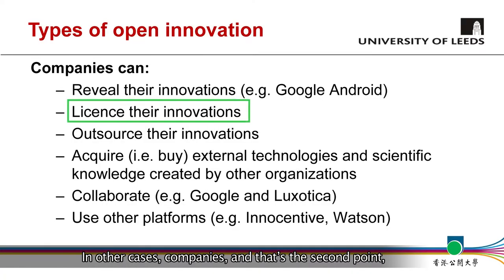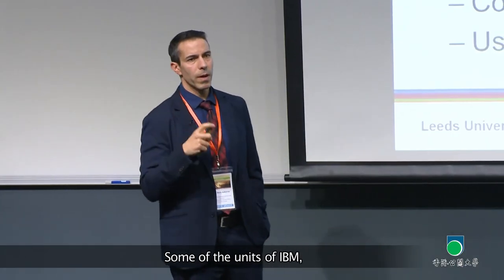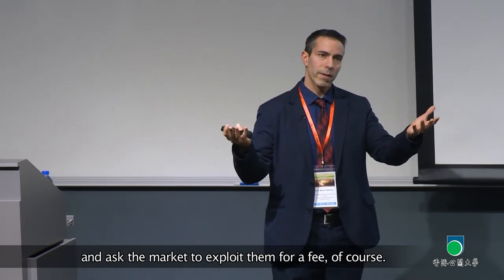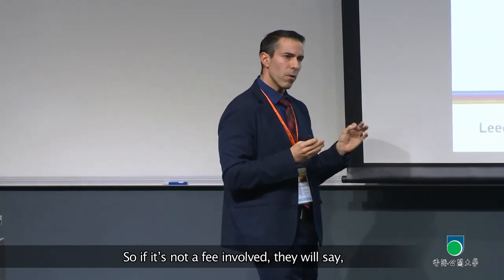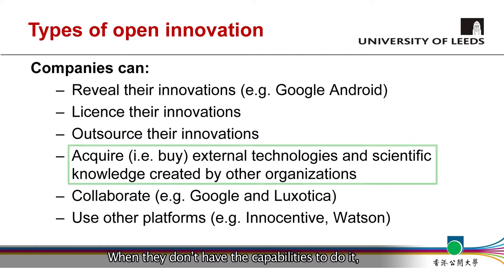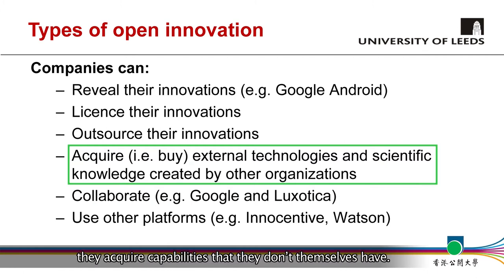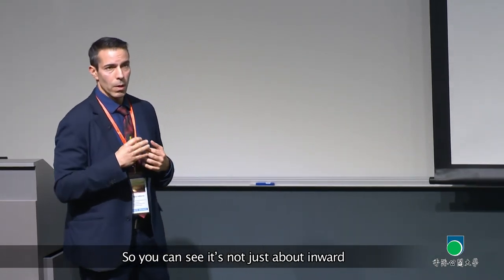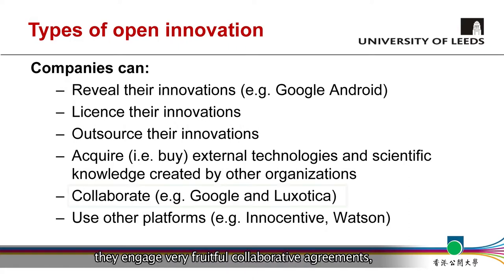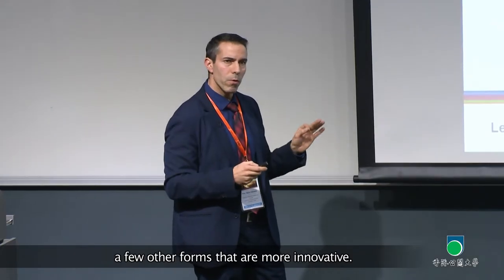In other cases, companies will not reveal their innovations for free, but will license them. A good example is IBM — a company that generates lots of patents every year. Some units say, 'Here are our patents; exploit them for a fee.' Or, if no fee is involved, they exchange capabilities. When they don't have the capabilities they need, they acquire firms — usually from developed countries — gaining capabilities they don't possess themselves. So open innovation is not just about inward flow but also outward. Companies also engage in collaborative agreements, alliances, and joint ventures.